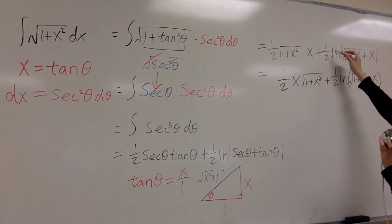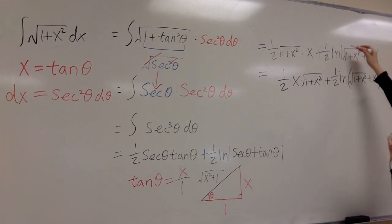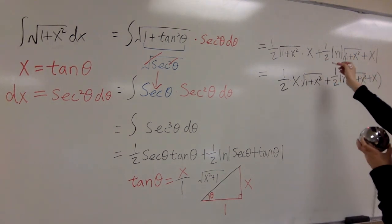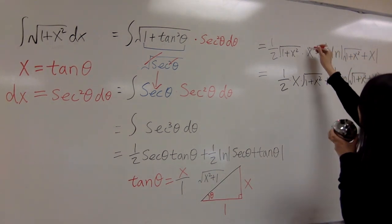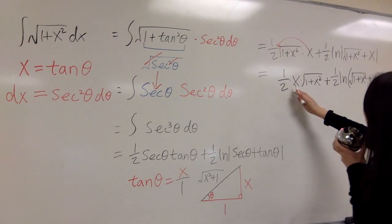Plus one-half ln of secant theta plus tangent theta. And we just write it better as we can put x in the front like this one.